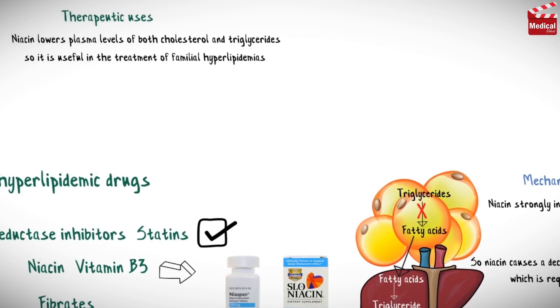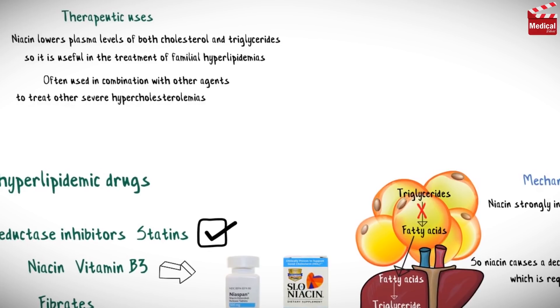Niacin lowers plasma levels of both cholesterol and triglycerides, so it is useful in the treatment of familial hyperlipidemias. It is often used in combination with other agents to treat other severe hypercholesterolemias.